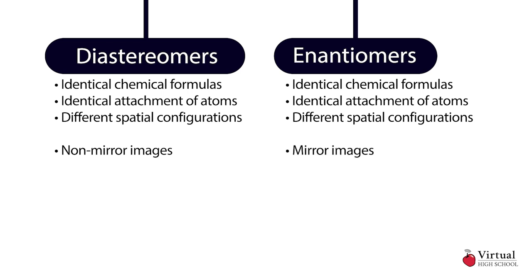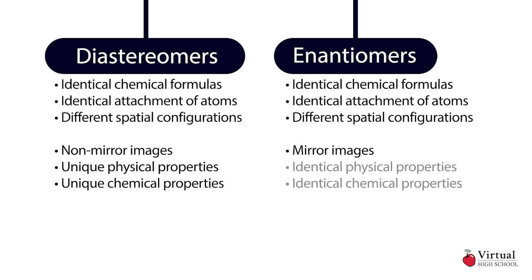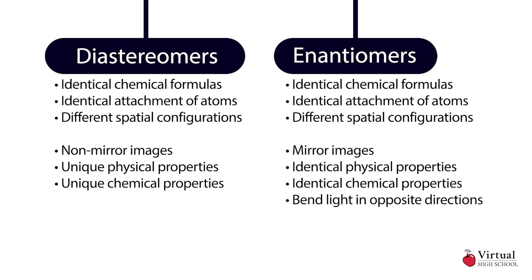Consequently, diastereomers have unique physical and chemical properties, while enantiomers have identical physical and chemical properties, with the exception of their optical activity.